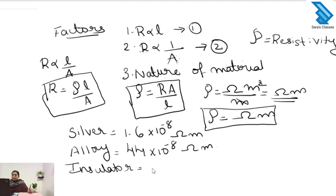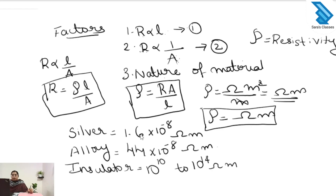For an insulator such as glass, the resistivity ranges from 10¹⁰ to 10¹⁴ ohm meter. So we are comparing three materials: silver with resistivity 1.6 × 10⁻⁸ ohm meter, the alloy manganin with 44 × 10⁻⁸ ohm meter, and glass as an insulator with 10¹⁰ to 10¹⁴ ohm meter.